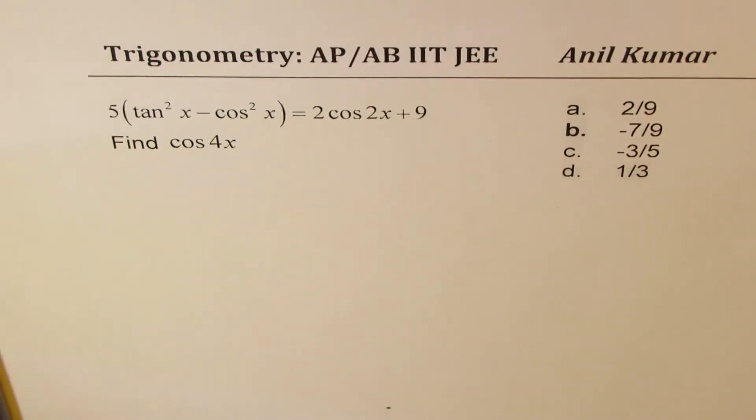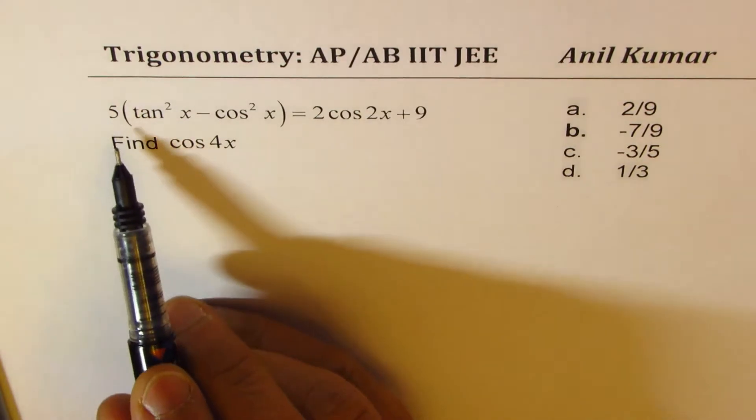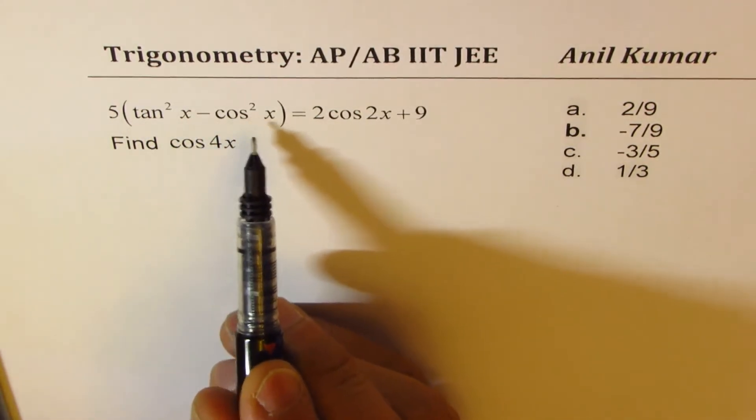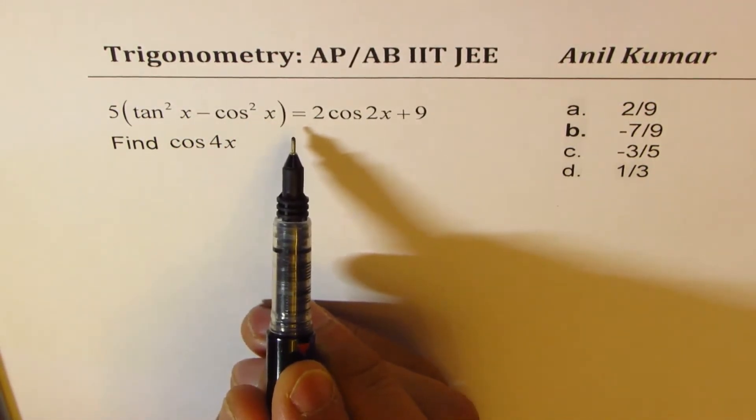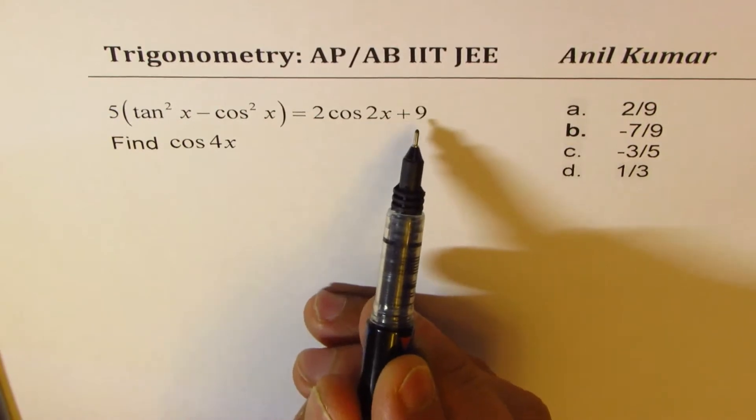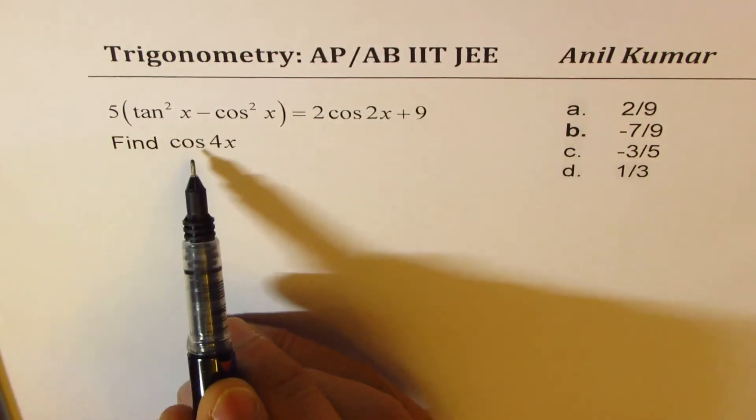I'm Anil Kumar sharing with you solution of a question from previous IIT JEE test paper. The question here is 5 tan square x minus cos square x equals 2 cos 2x plus 9. Find the value of cos 4x.